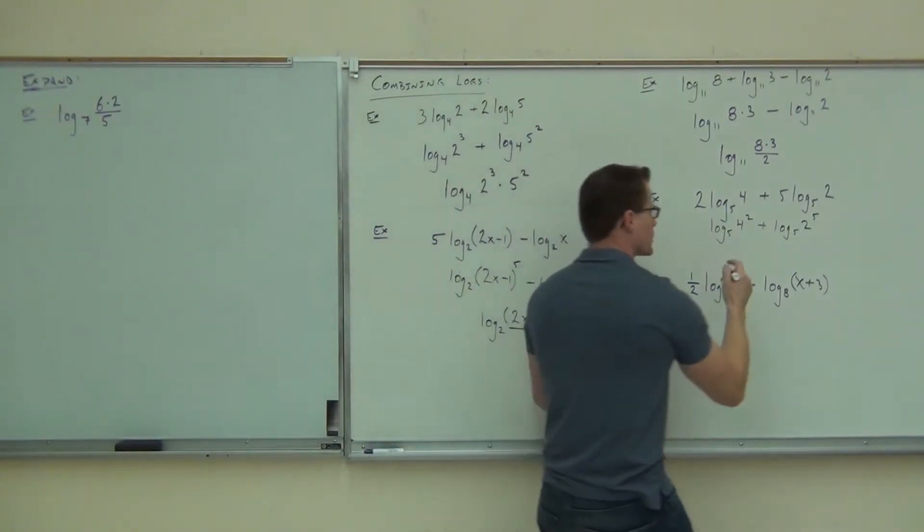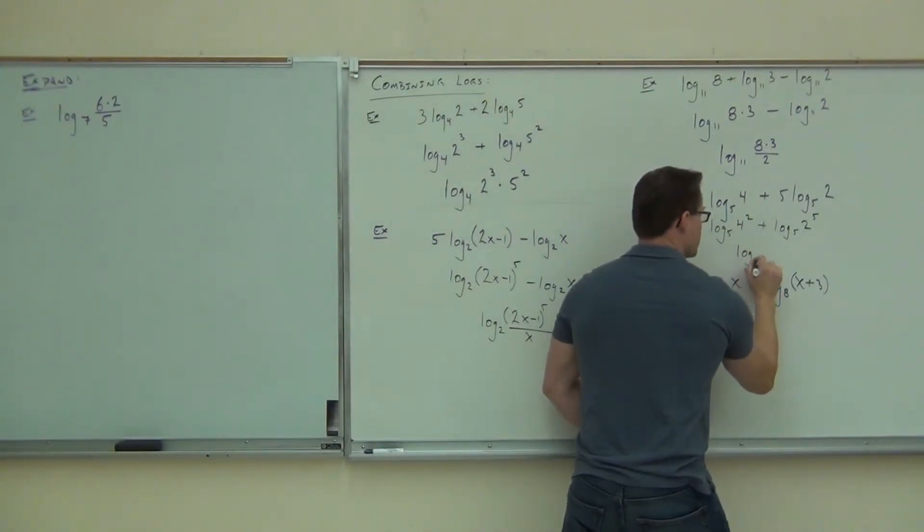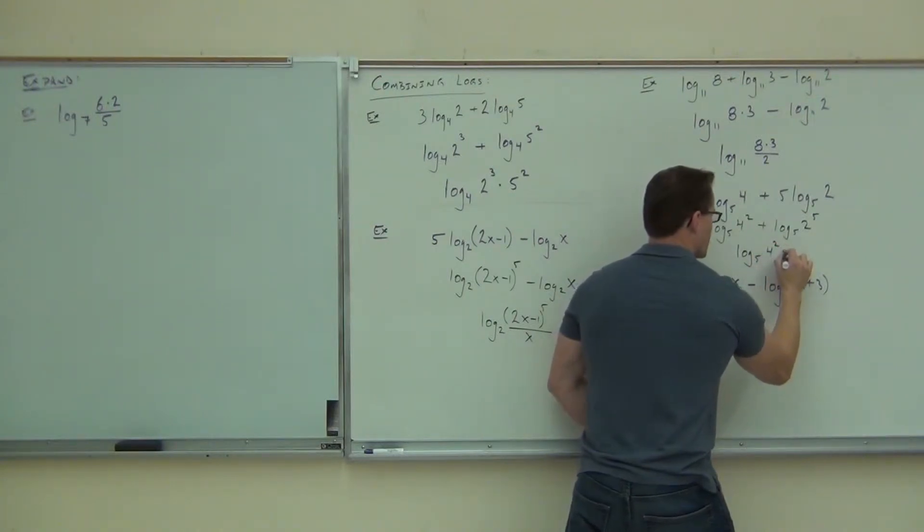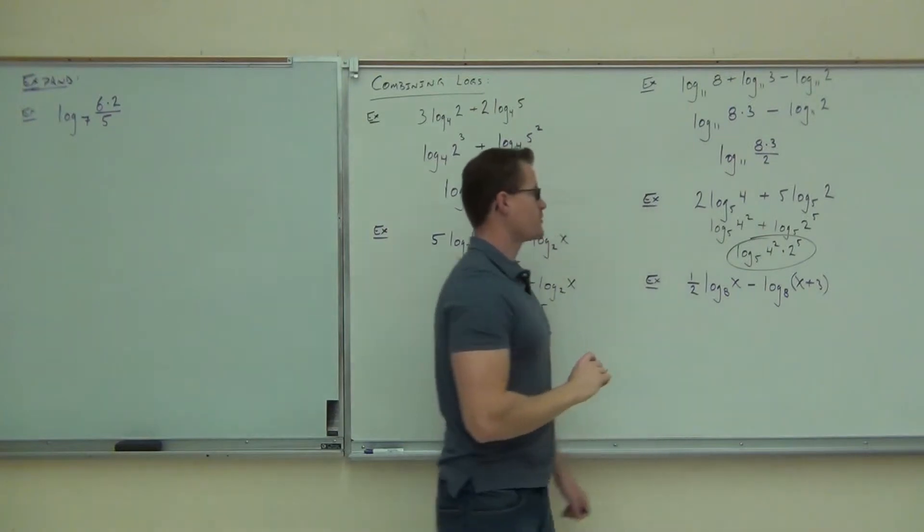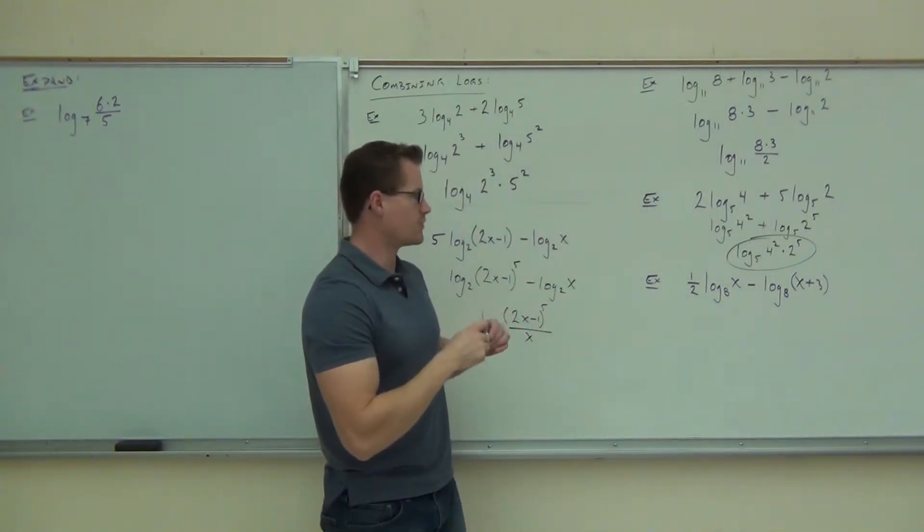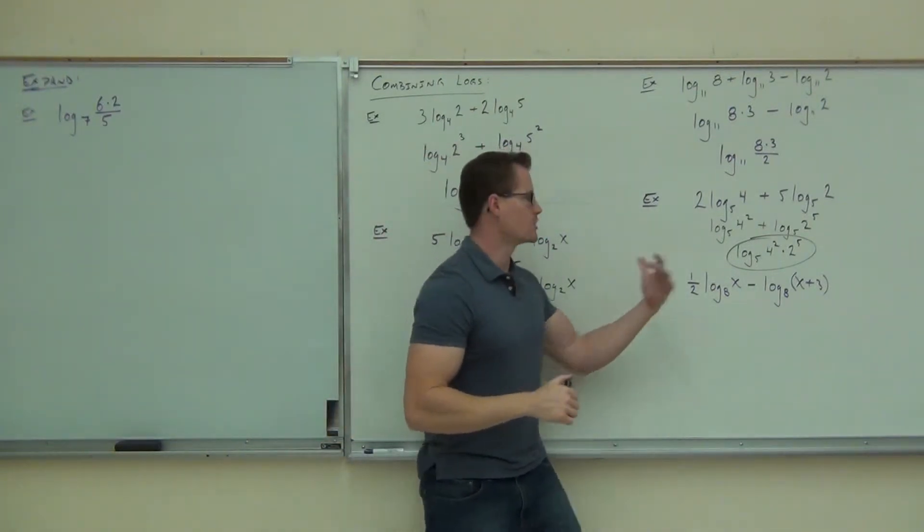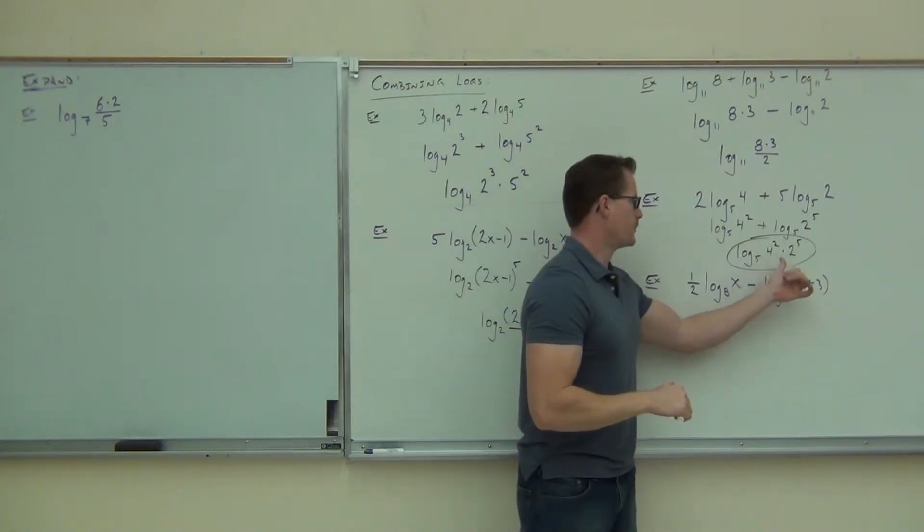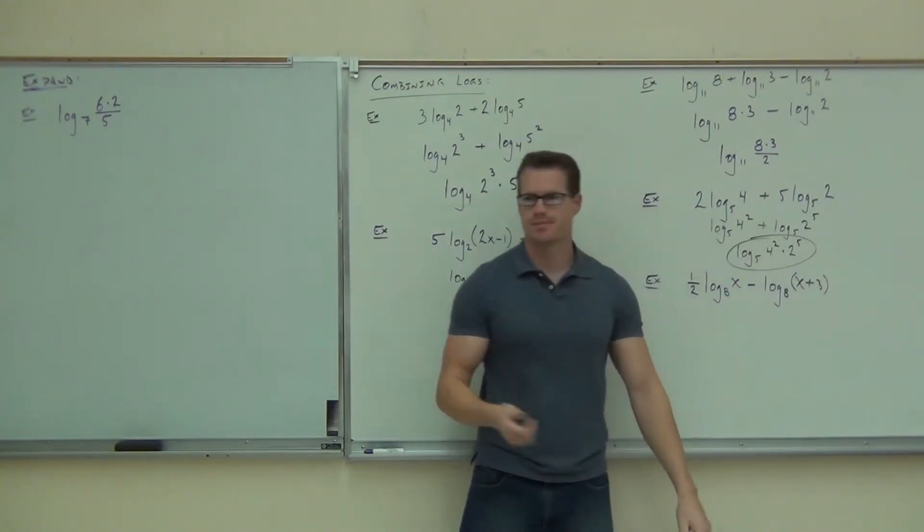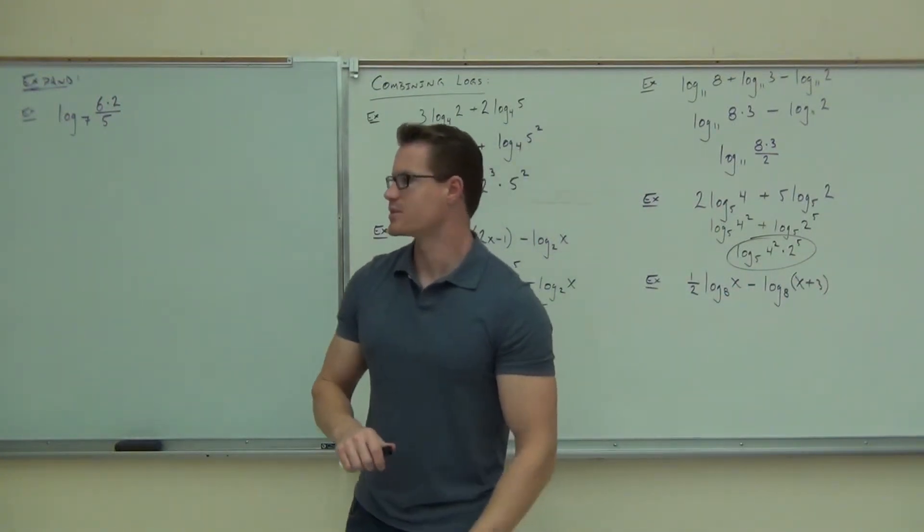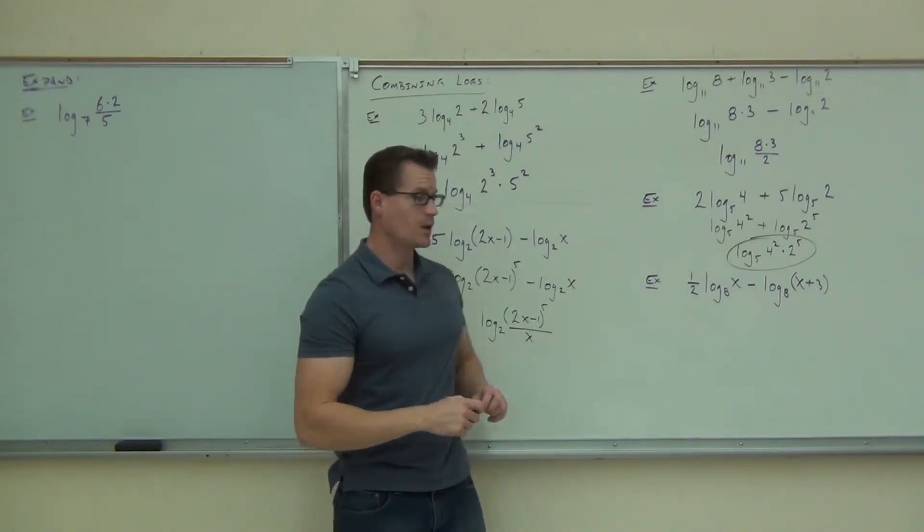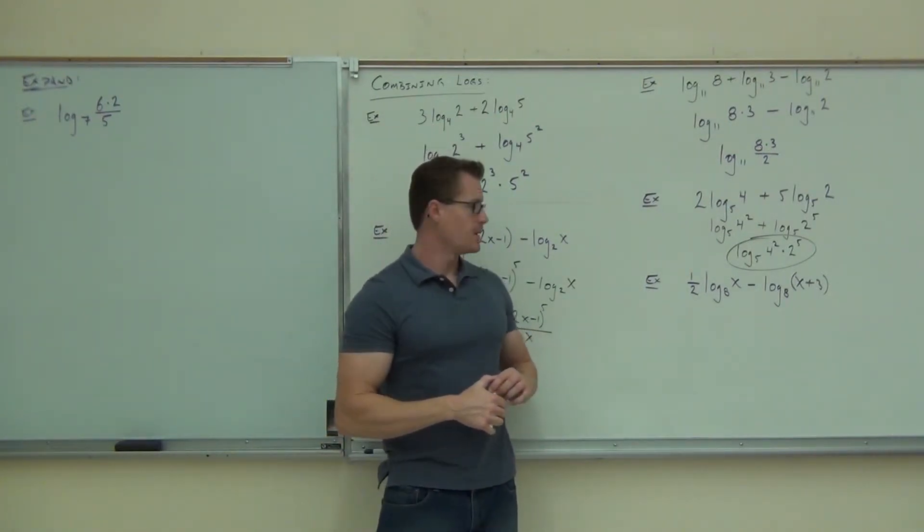Now we have a log plus a log with the same base. We can also combine that by multiplication. That will be log base 5 of 4 squared times 2 to the 5th. Log base 5 of 4 squared times 2 to the 5th. On your paper you can actually do the work and get, what is that, 16 times 32, whatever that happens to be on your paper. Okay, so far? Okay, next up.